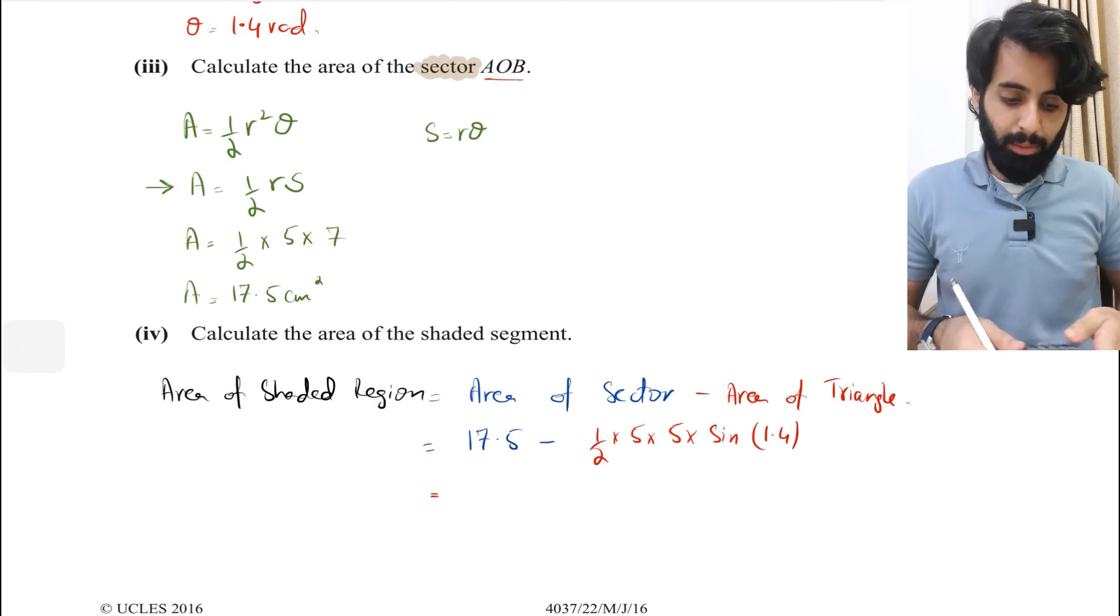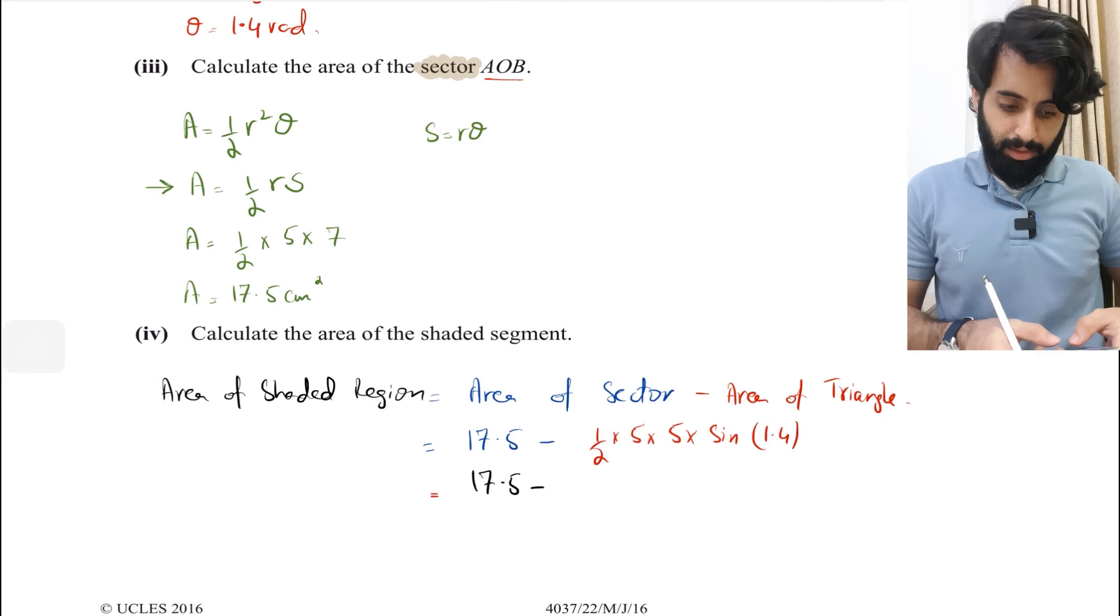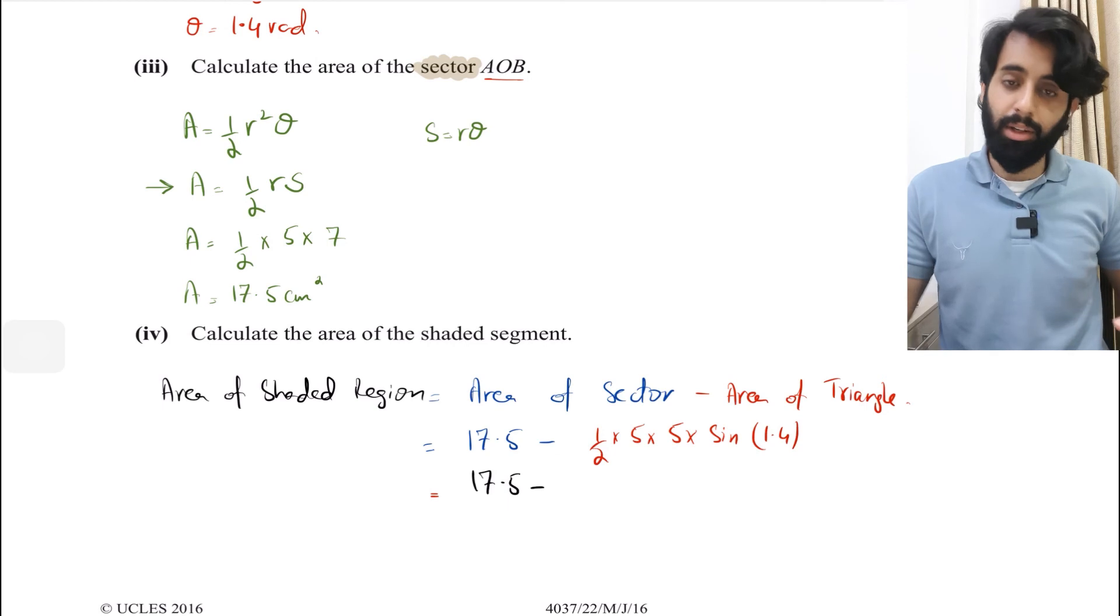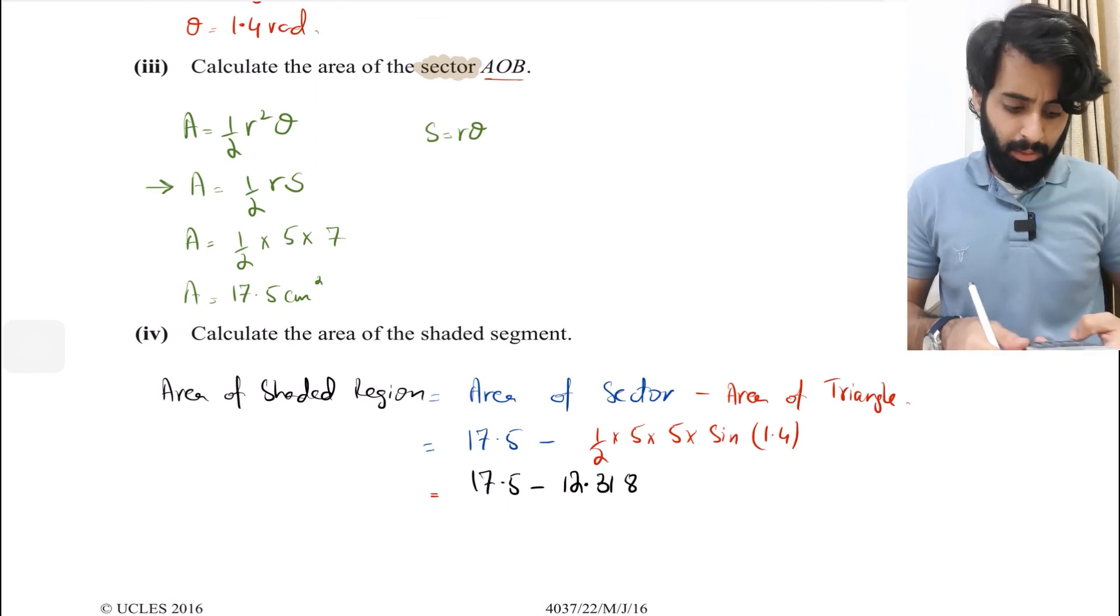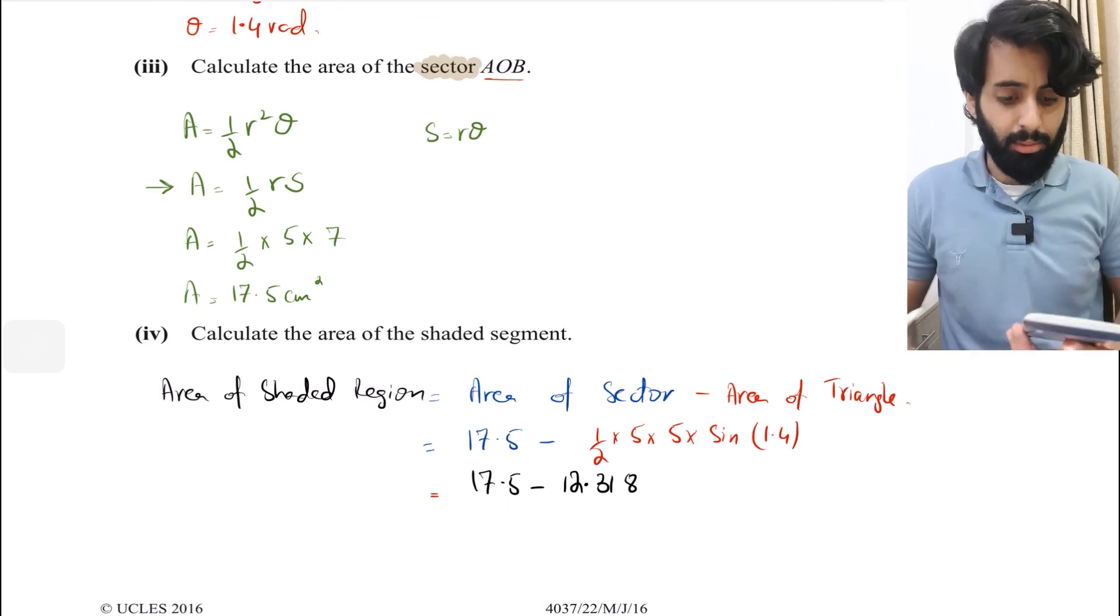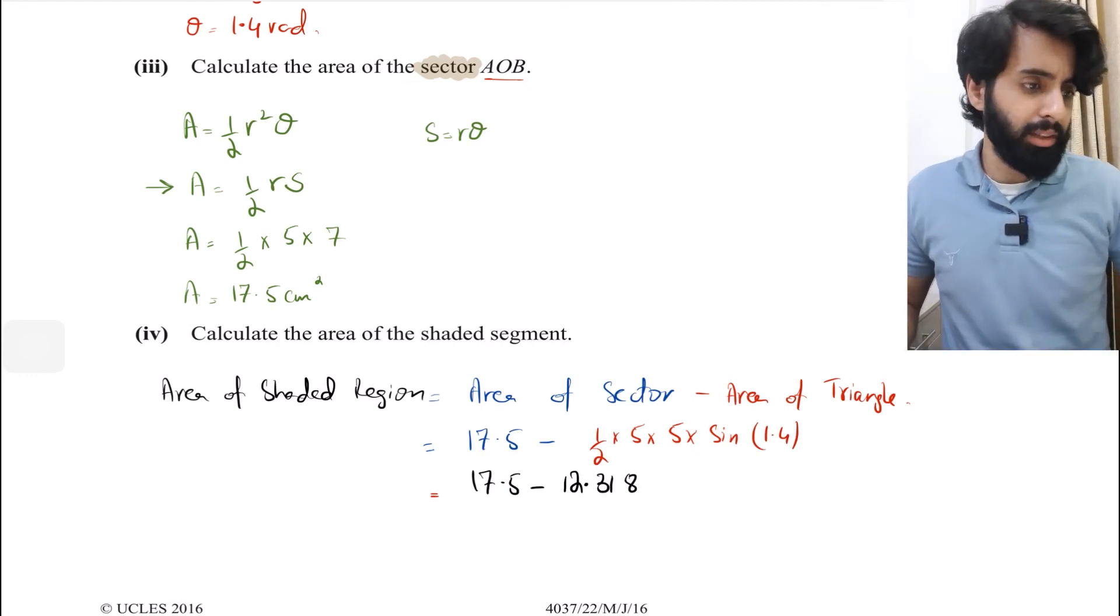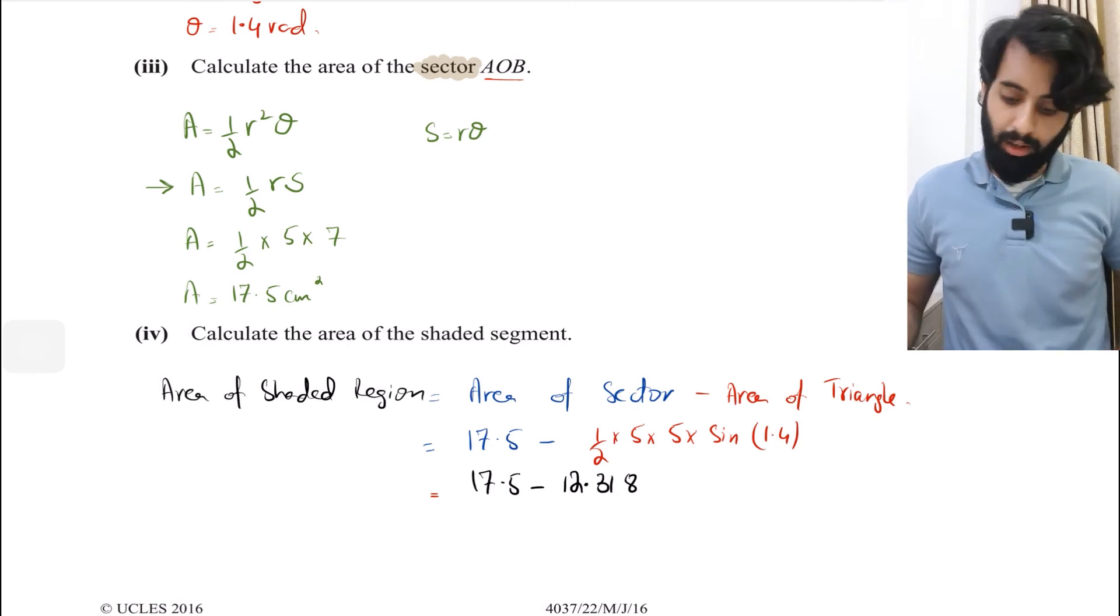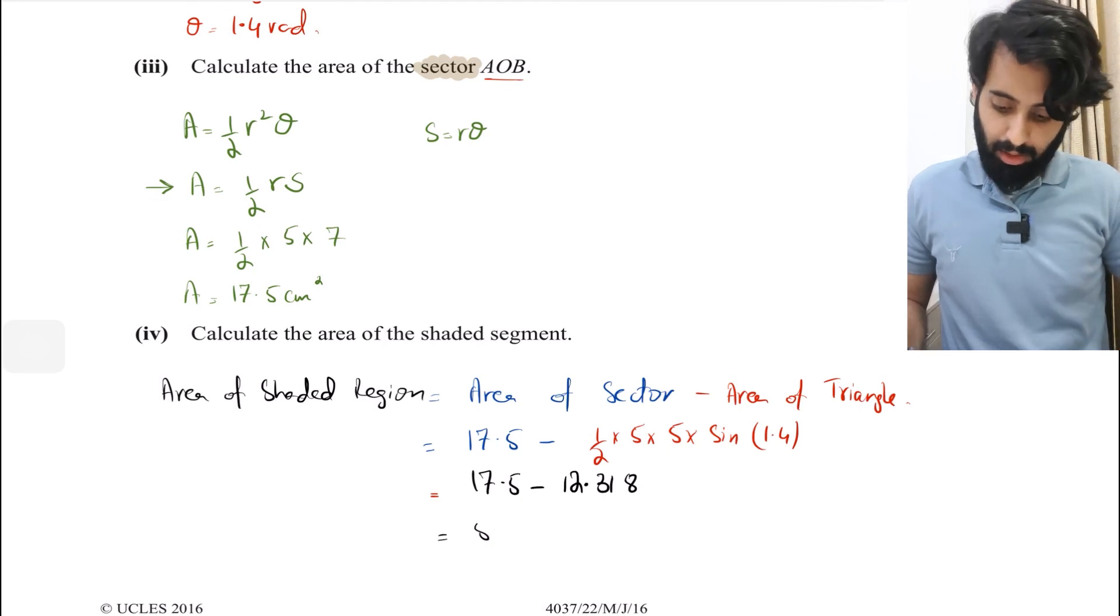So 17.5 stays where it is. 0.5 times 5 times 5 times sine 1.4. Remember, make sure your calculator is in radian mode. This turns out to be 12.318. I'm going to do 17.5 minus answer, so that gives me 5.18. I'm going to stick to three significant figures, so 5.18 cm² is the final answer.